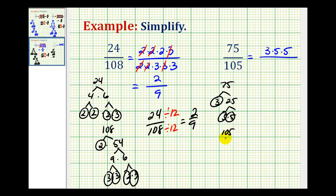And for 105, it ends in a five. So how about five times 21? And then 21 is three times seven. So we have a factor of three, a factor of five, and a factor of seven.